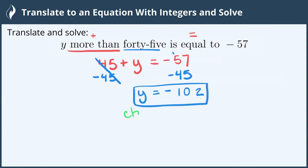We can check this as well by plugging in negative 102 into the original equation. 45 plus negative 102, replacing the y, to see if it equals negative 57. Using my calculator, negative 102 plus 45 is negative 57, which does in fact equal negative 57. So it does check.